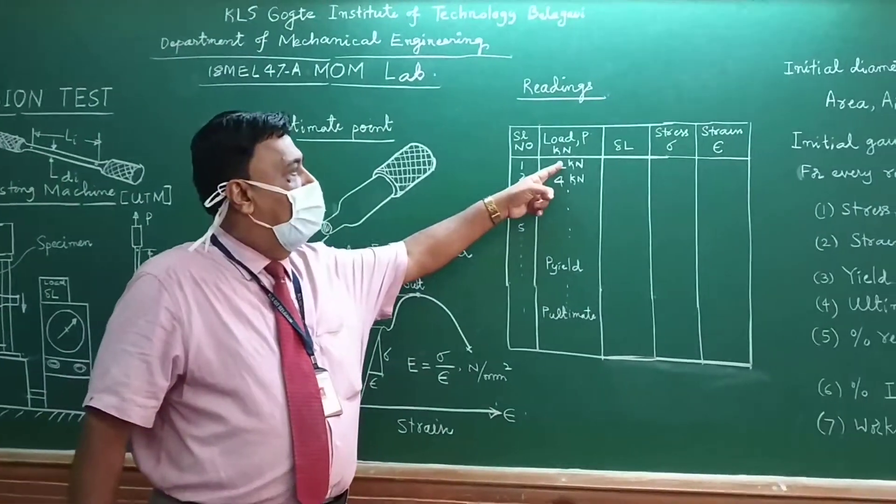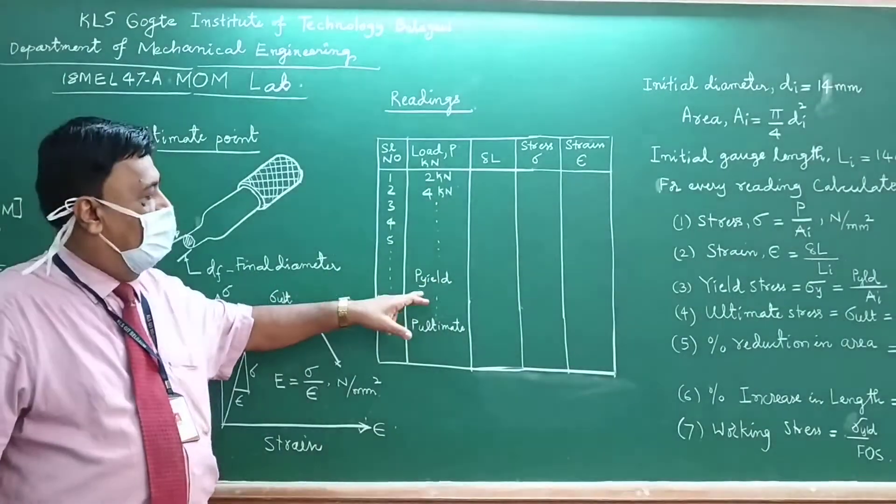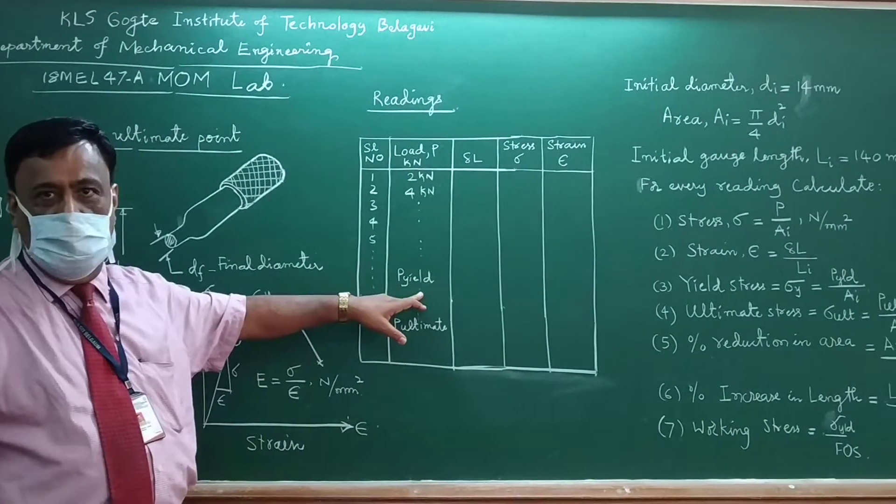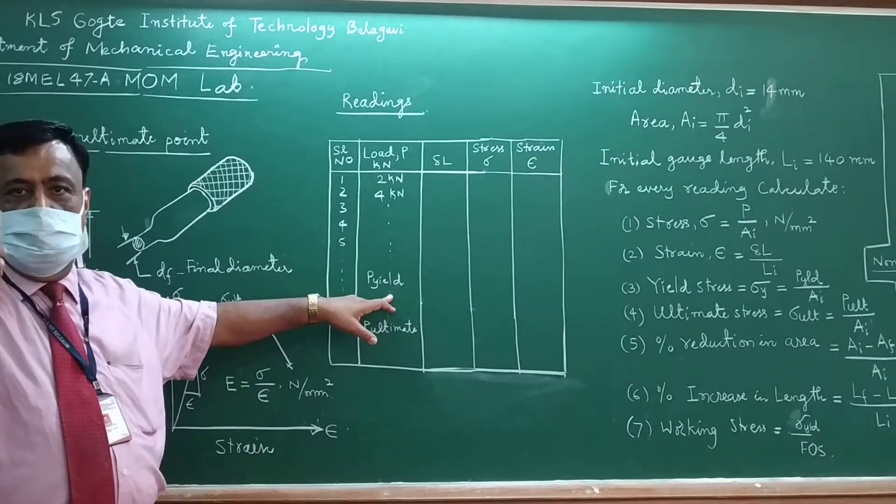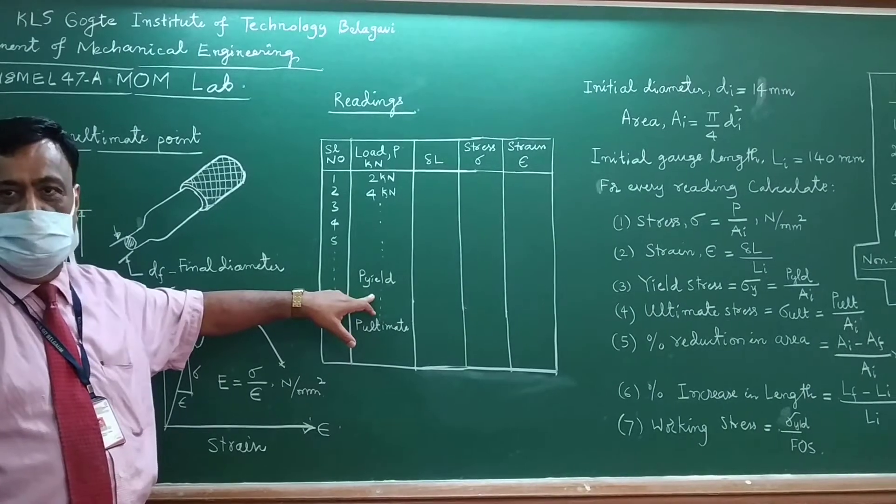When you are going from 2, 4, 6, 8 kilonewtons, there is a point where without completion of the load, the specimen will start elongating. We call it the yield point load. This load has to be noted down again.